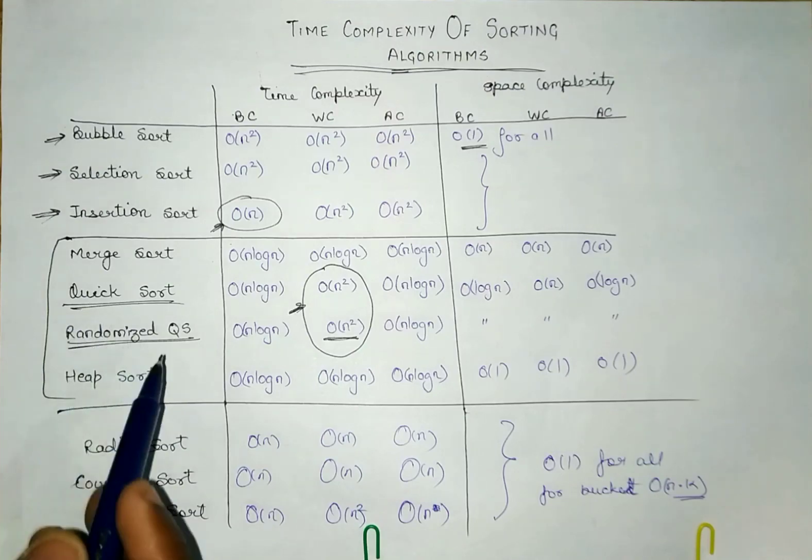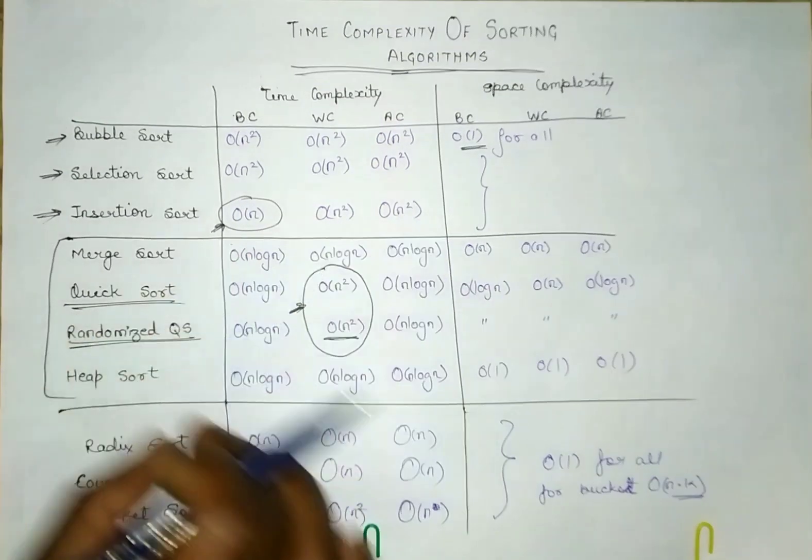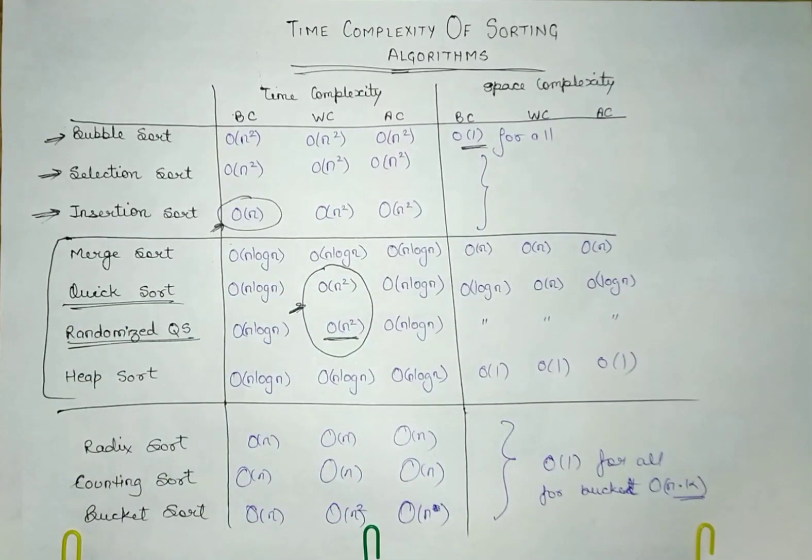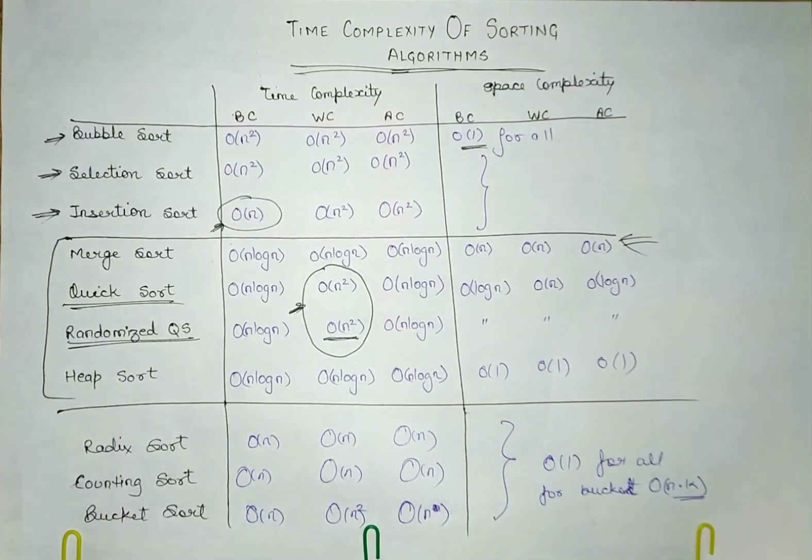So as compared to quick sort, randomized quick sort is better. For all of these, the time complexity is order of n log n. If you talk about the space complexity, in merge sort we need an extra space, that is an array to add all the things. Because of that, the space complexity is order of n.